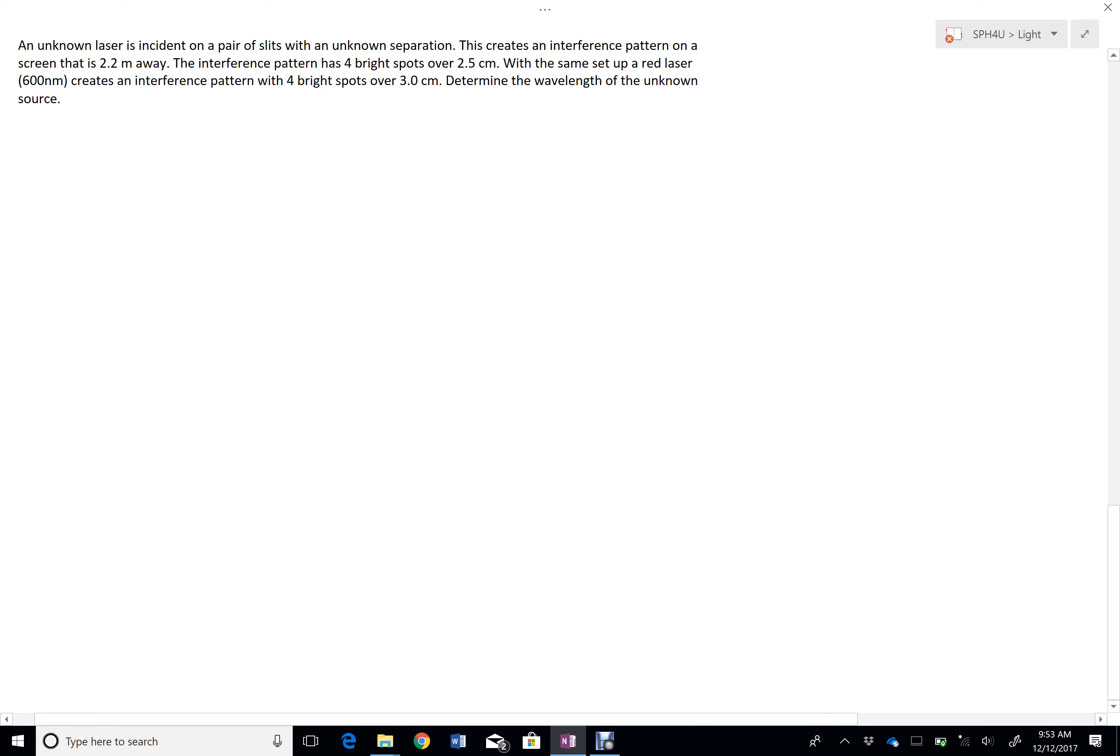Alright, one more example of a Young's double slit problem. An unknown laser is incident on a pair of slits with an unknown separation. This creates an interference pattern on a screen that's 2.2 meters away, L equals 2.2 meters away.